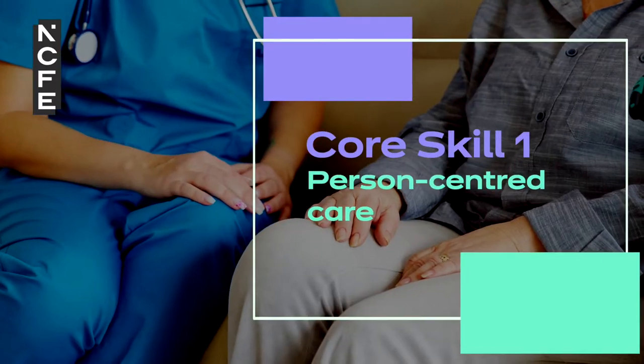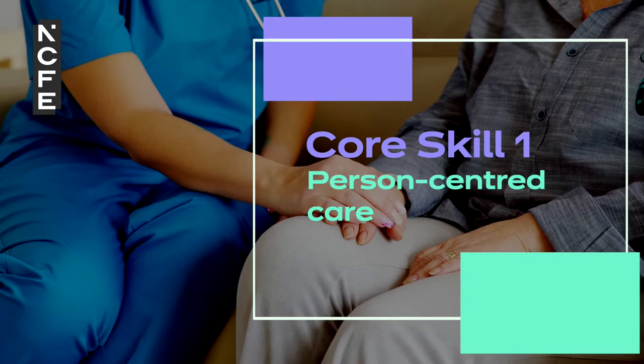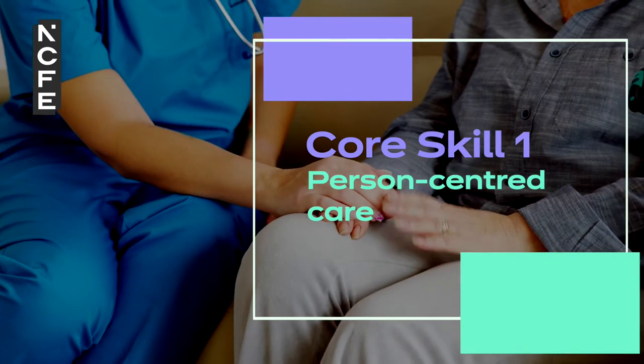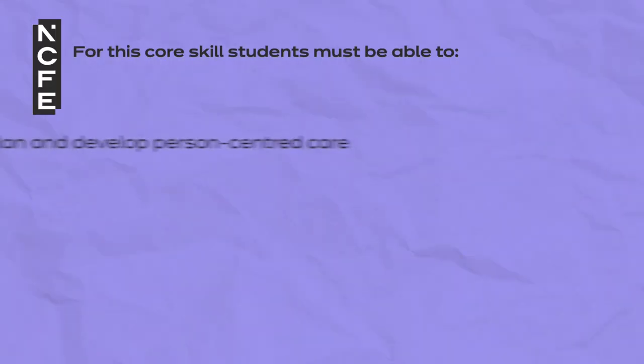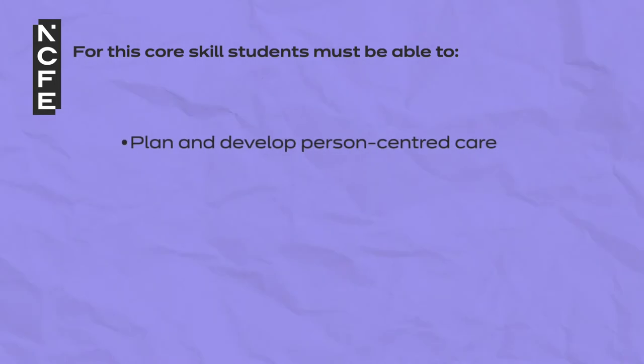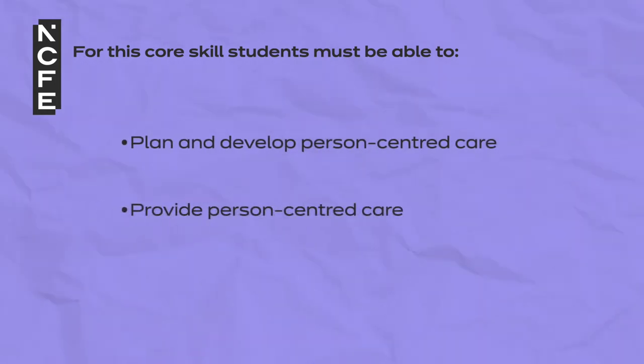Core skill one – person centred care. For this core skill, students must be able to plan and develop person centred care and provide person centred care. More detailed information can be found within the core skills section of the health qualification specification.